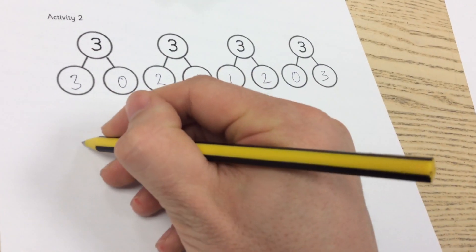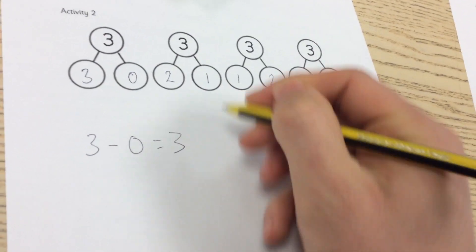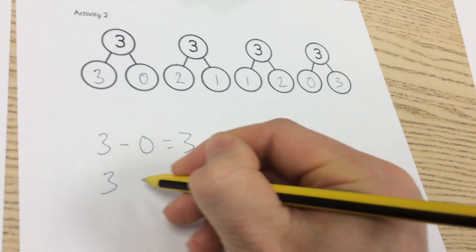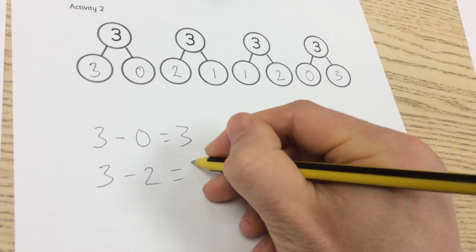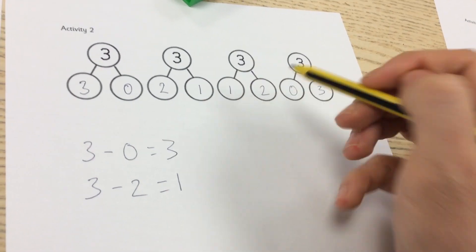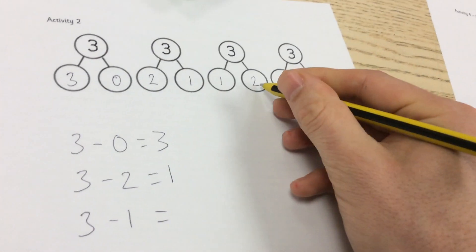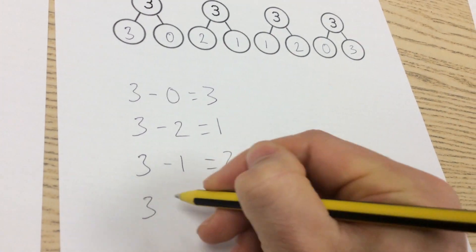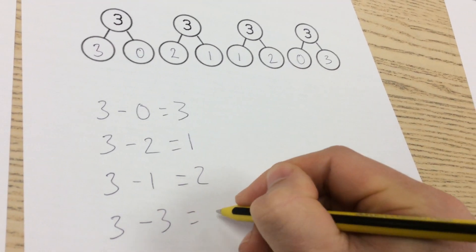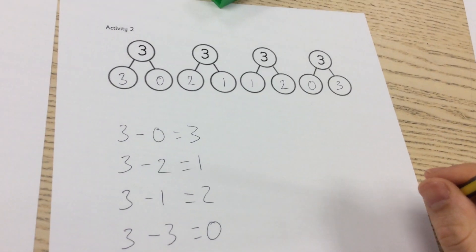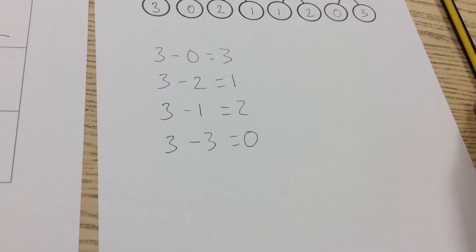So I know that 3 take away 0 equals 3 and also 3 take away 2 equals 1 and 3 take away 1 equals 2 and then 3 take away 3 equals 0. But again you can use the unifix to help you with that and record them systematically.